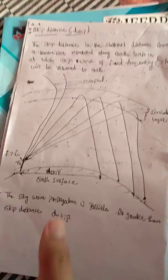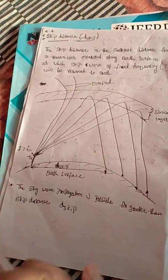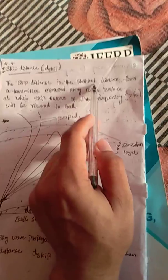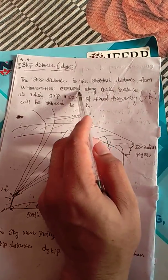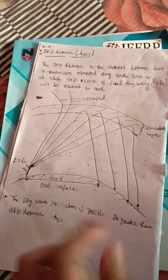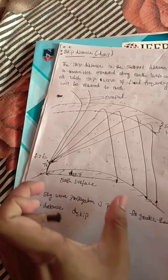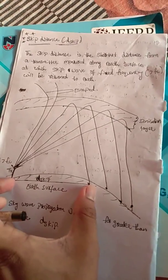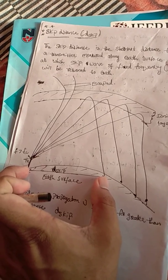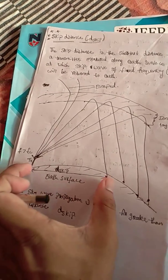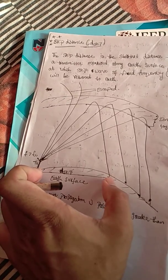Many signals came back to the earth's surface. But the shortest distance — measured along the earth's surface from the transmitter — is the skip distance. Among the various returned signals, the one with the shortest distance from the transmitter defines the skip distance.